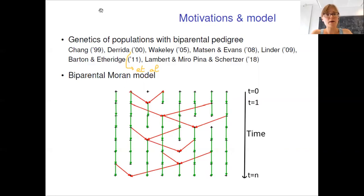As mentioned in a series of papers by John Wakeley, biparental genetic transmission is interesting to study and has received interest. First in papers by Cheng and by Derrida and co-authors dealing with the time to most recent common ancestor and genetic composition in a biparental Wright-Fisher model. Similar results have been obtained by Linder for the biparental Moran model. Madsen and Evans and Barton and Heathridge have studied the link between pedigree and genetic transmission. And finally, Lambert and co-authors have recently studied the impact of recombination on genomes.